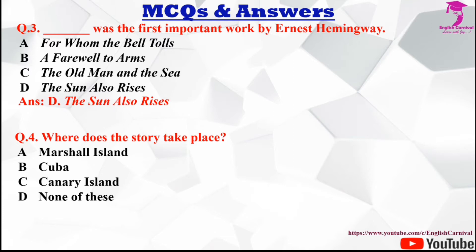Question number four: Where does the story of The Old Man and the Sea take place? Options are A Marshall Island, B Cuba, C Canary Island, and D None of these. The correct answer is B, Cuba.